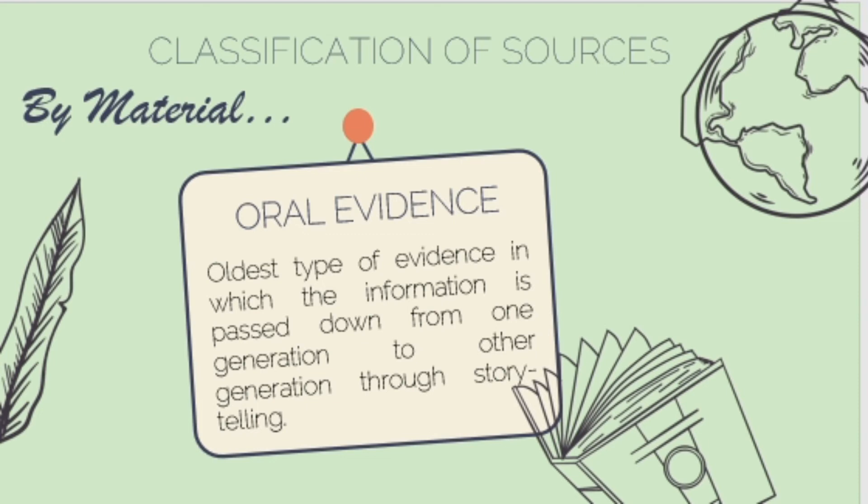Technological innovations of mankind were also instrumental sources to the writing of history. These innovations include photographs, moving pictures, sound recordings, radio, TV, and film recordings, which emerged from the 1800s to 1900s. All these types and classifications of sources can be used to complement each other and strengthen the interpretations of historians.